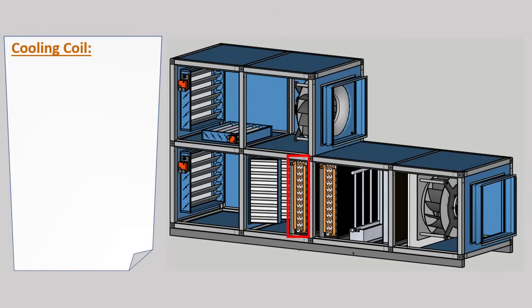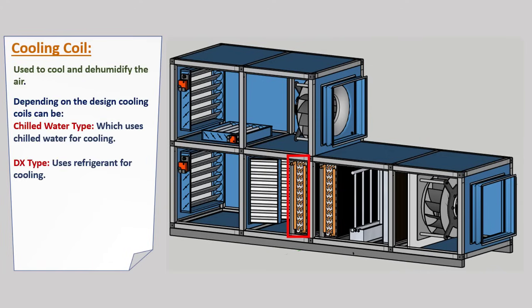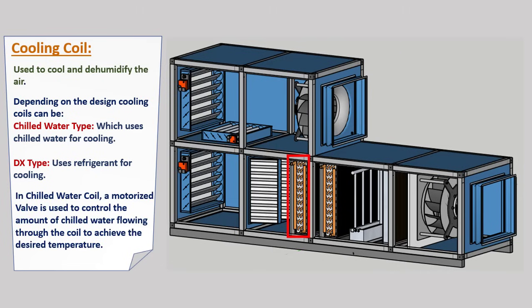After the filter, we have a cooling coil, used to cool and dehumidify the air. Depending on the design, the cooling coil can be a chilled water type, which uses chilled water for cooling, or a DX type, which uses a refrigerant and compressor. In a chilled water coil, a motorized valve controls the amount of chilled water flowing through the coil to achieve the desired temperature.